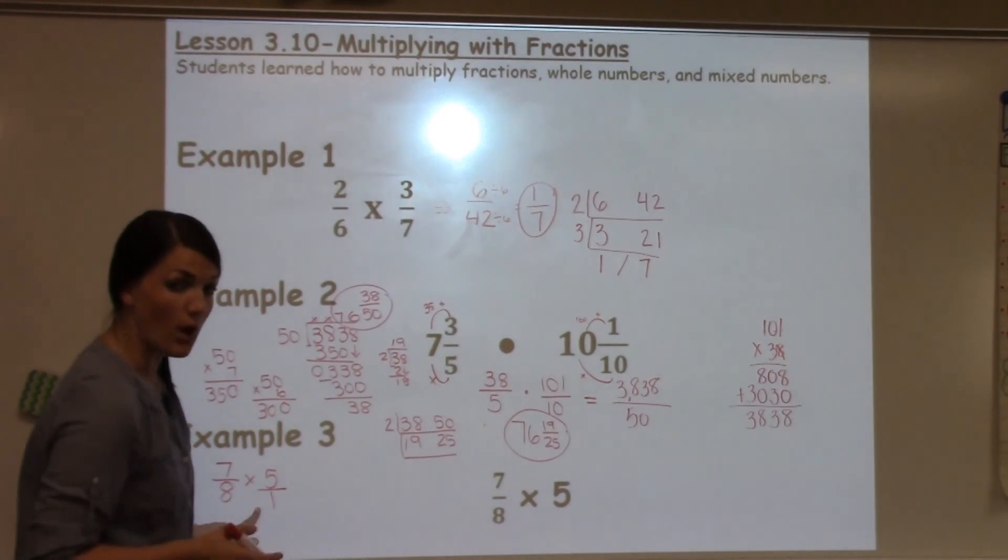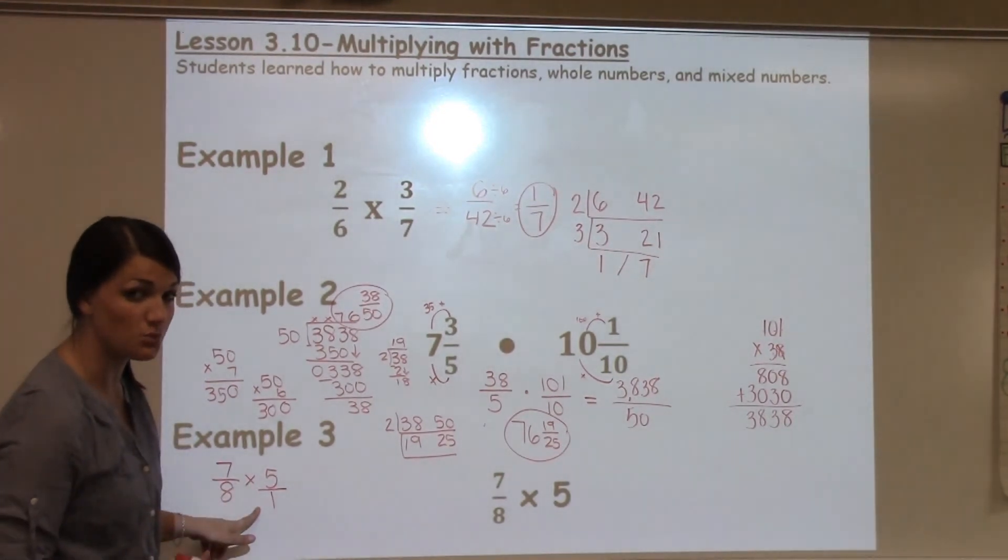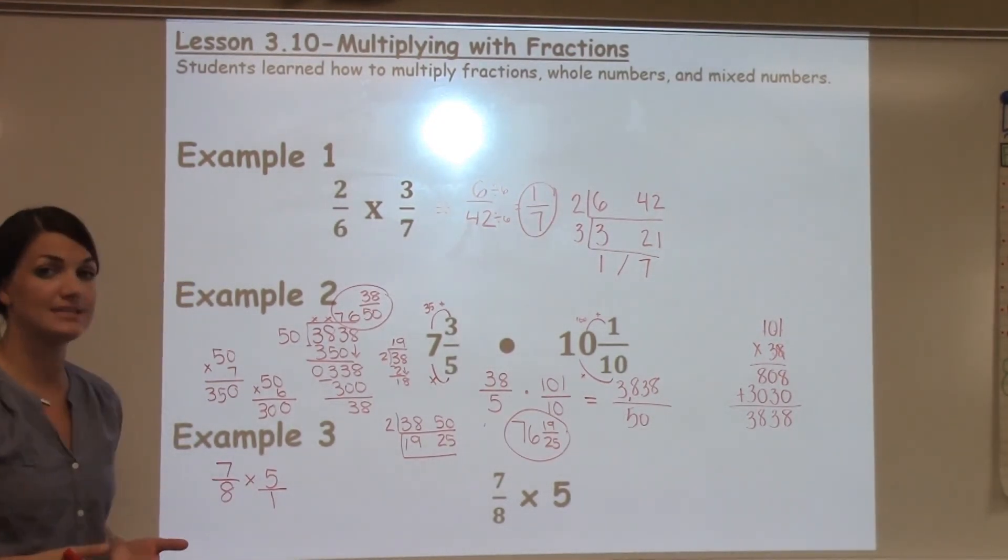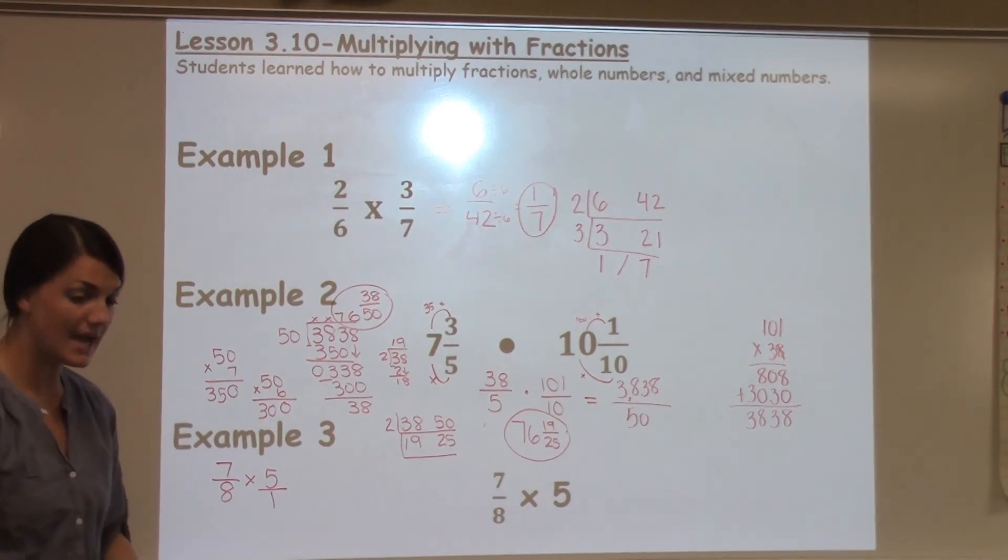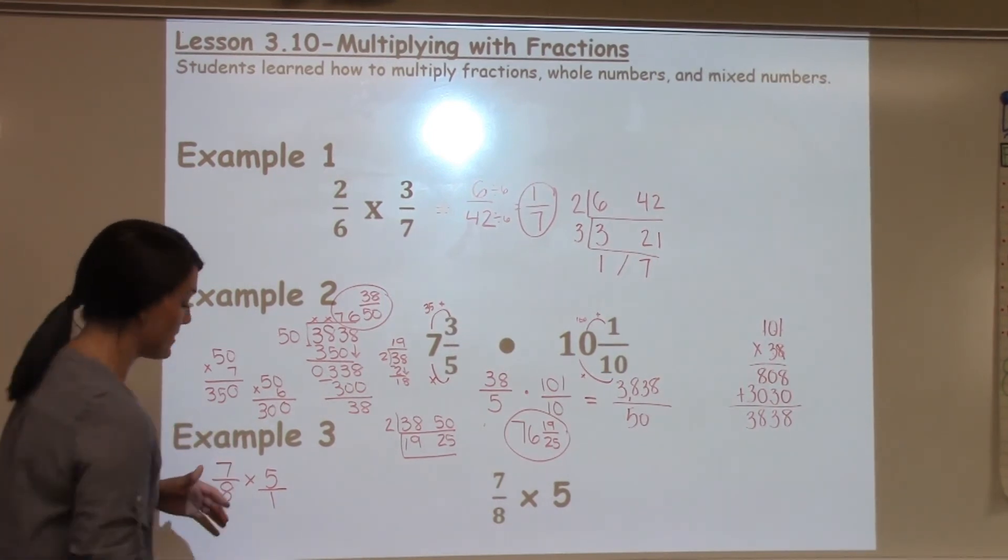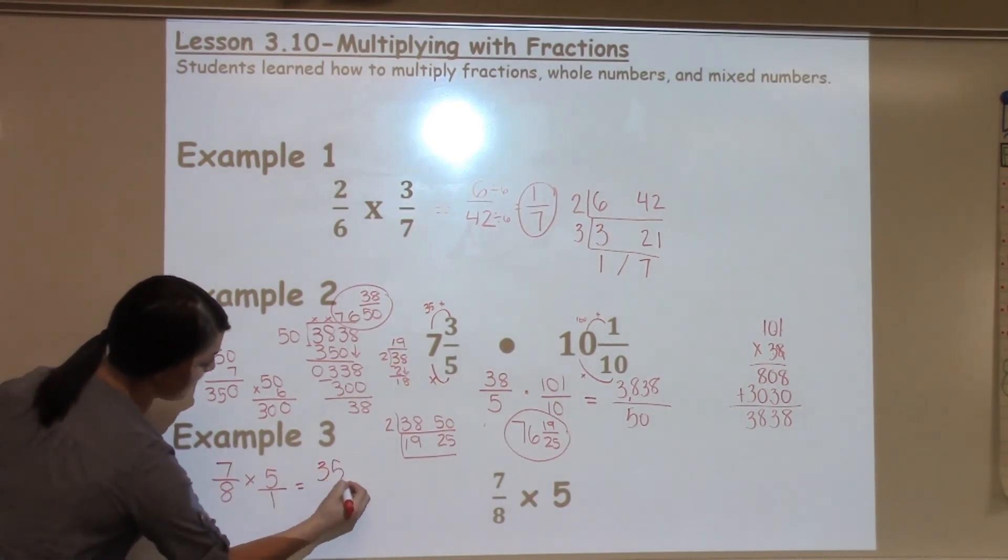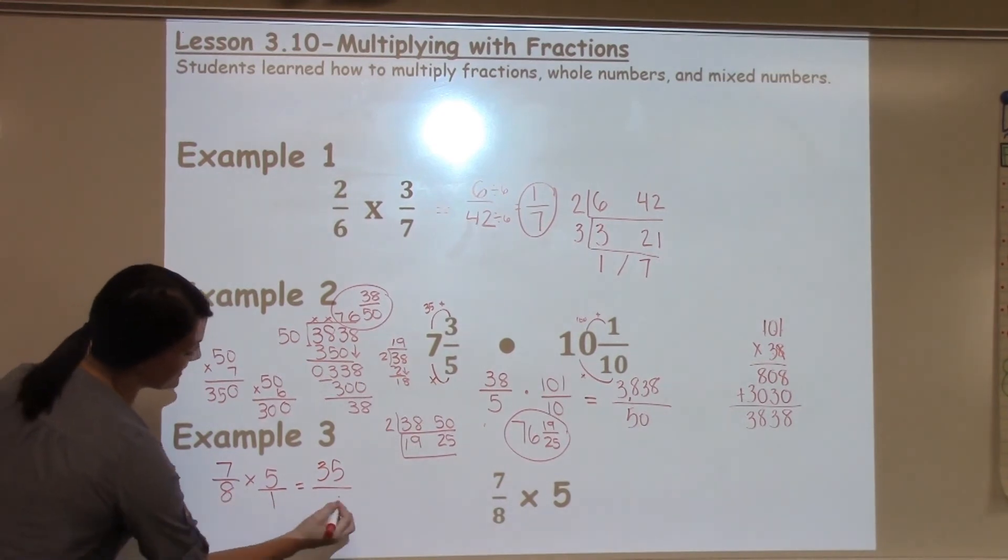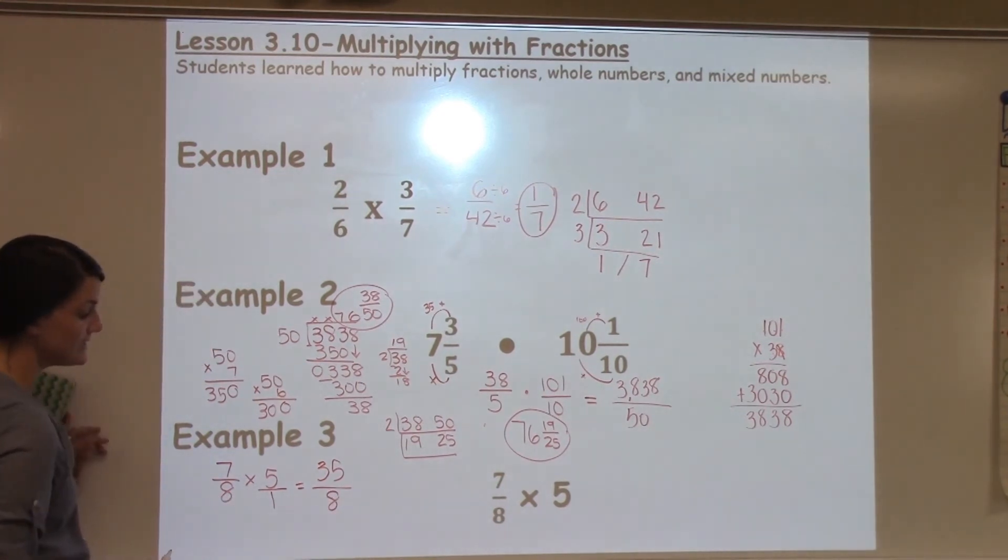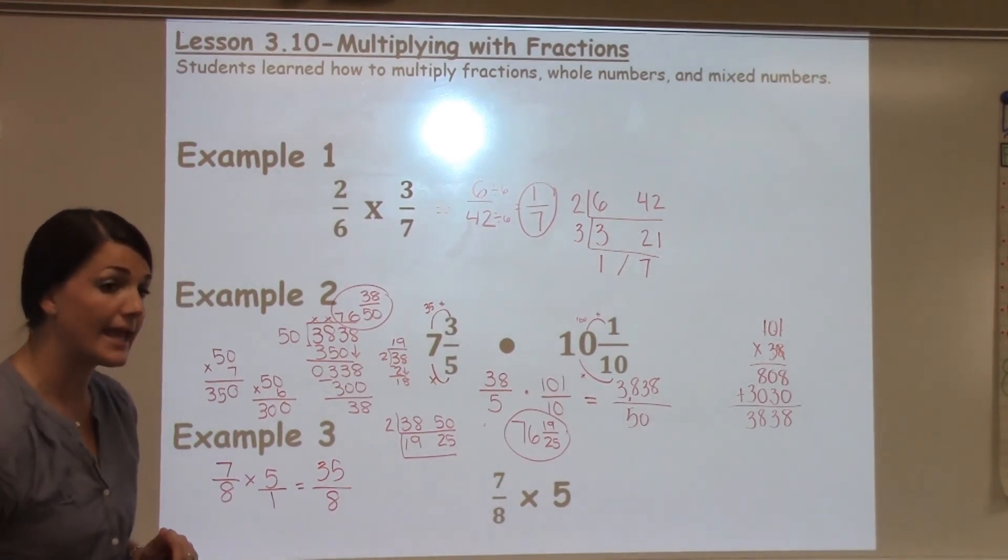By putting it over 1, I do not change how much it's worth. But I cause it now to have a numerator and a denominator without changing how much it's worth, so now I can multiply with it. I take top times top, 7 times 5, which is 35. Bottom times bottom, 8 times 1, which is 8, for an answer of 35/8.